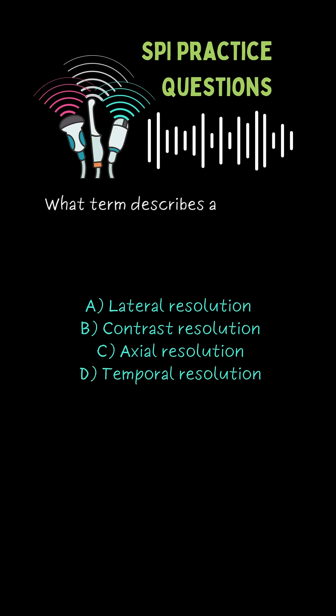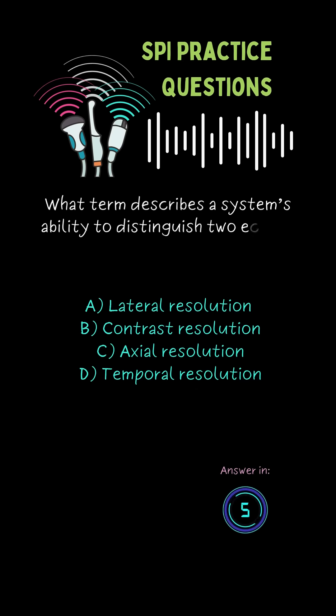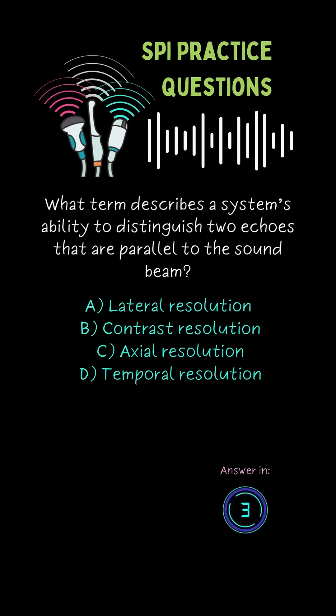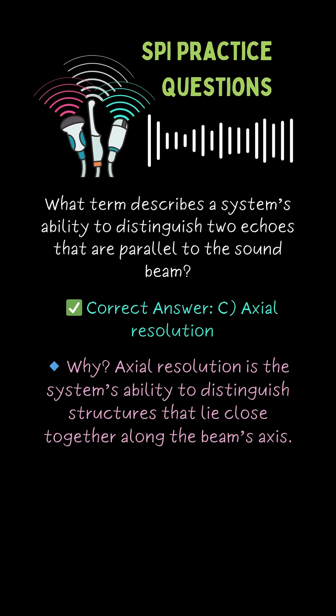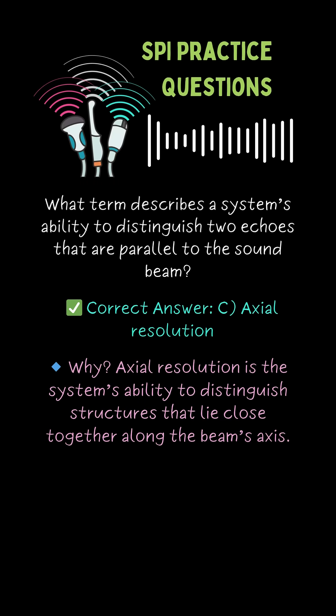What term describes a system's ability to distinguish two echoes that are parallel to the sound beam? C. Axial resolution.